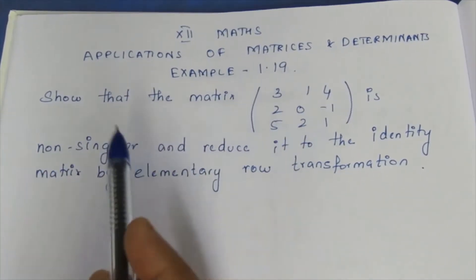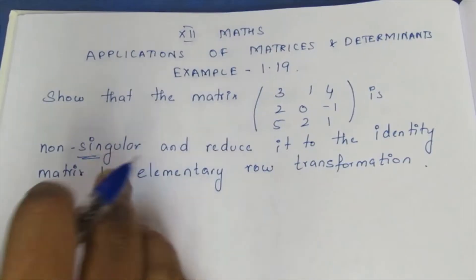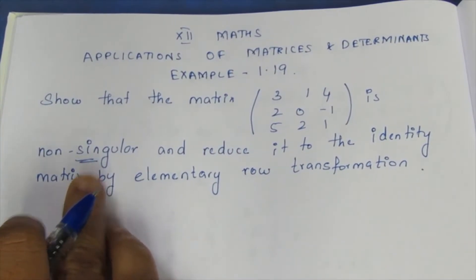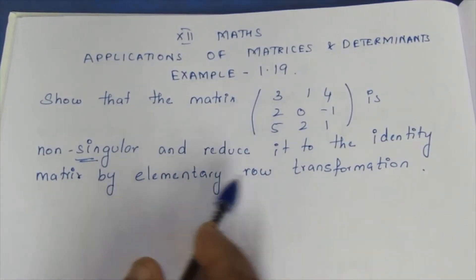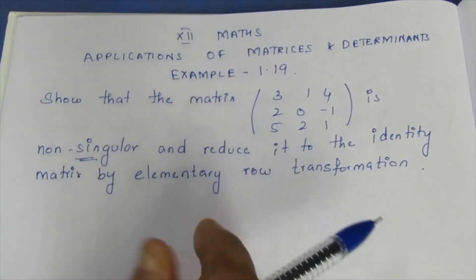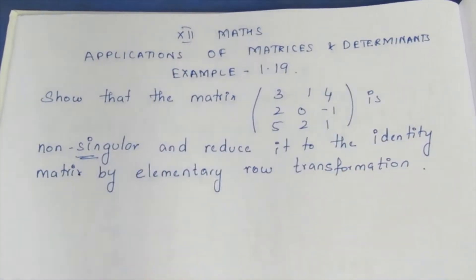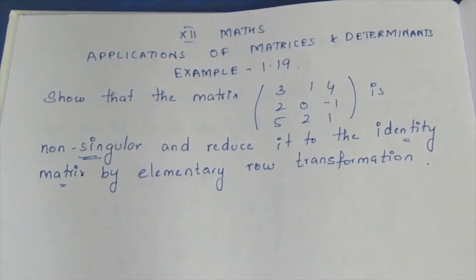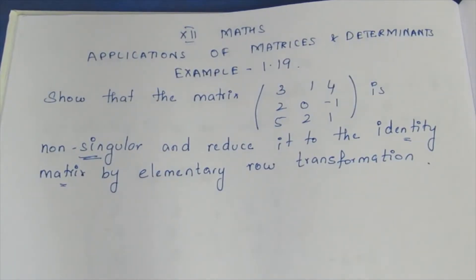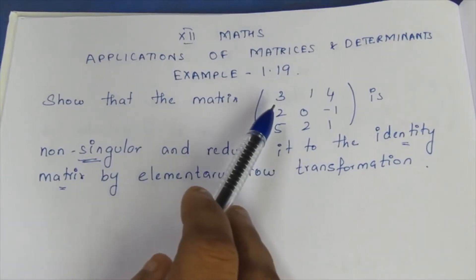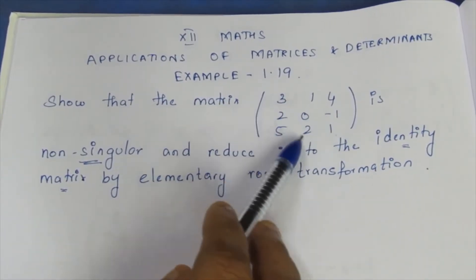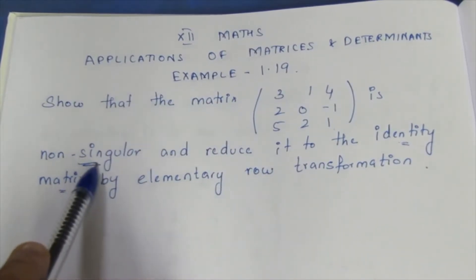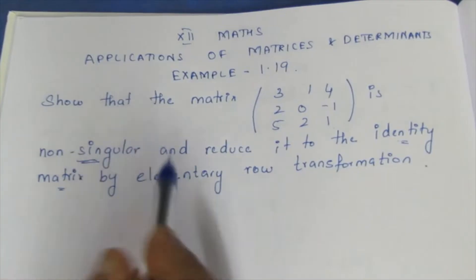We need to show that the matrix is non-singular. If it is a non-singular matrix, we can apply elementary row transformations to reduce it. The identity matrix is obtained by elementary row transformation. The identity matrix has ones on the diagonal and zeros elsewhere, and it is itself a non-singular matrix.